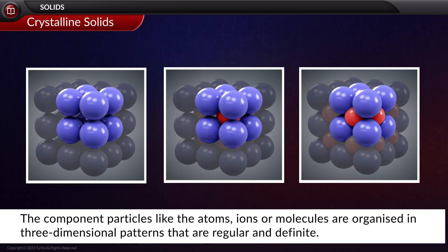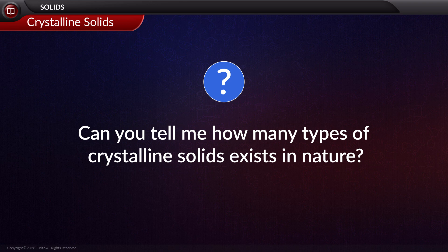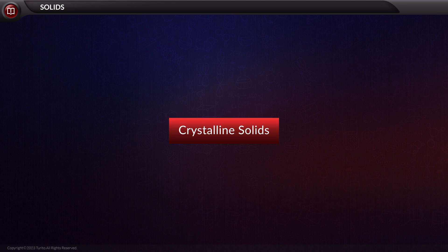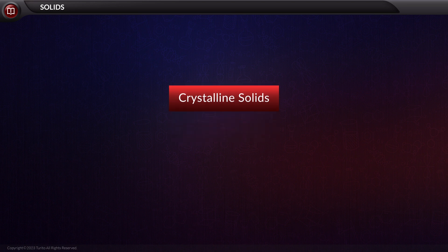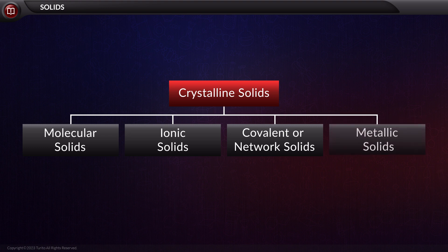The components in crystalline solids are organized in three-dimensional patterns that are regular and definite. There are four types of crystalline solids, categorized based on the intermolecular forces that act between the constituents: molecular solids, ionic solids, covalent or network solids, and metallic solids. Let us understand these types of solids one by one in detail.